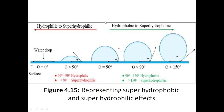To understand how contact angle is measured: if water distributes all over the surface, the contact angle is zero degrees — fully hydrophilic. As hydrophobicity increases, a small drop forms at less than 90 degrees. At greater than 90 degrees, hydrophobic nature begins. Above 150 degrees, super hydrophobicity is achieved — the droplet has no space to stand and rolls off, taking dirt with it, giving the self-cleaning property.